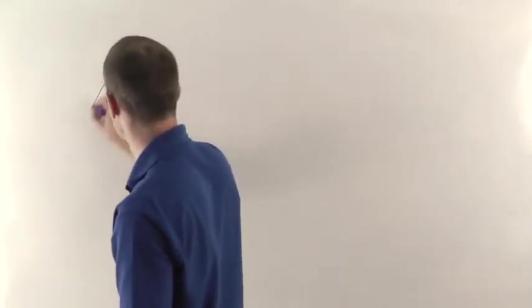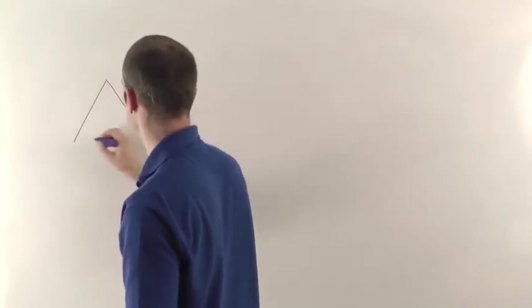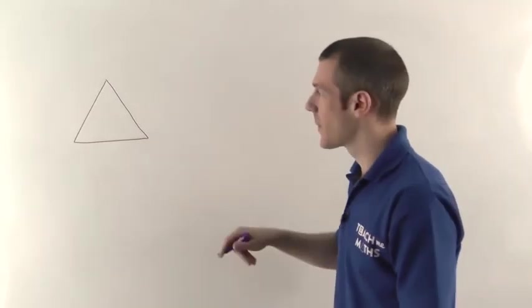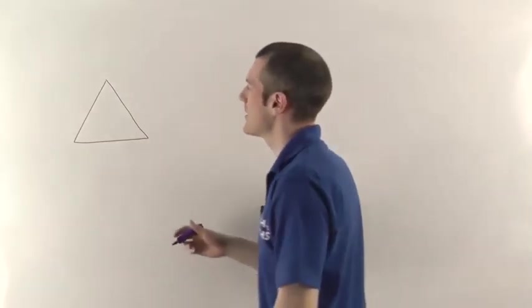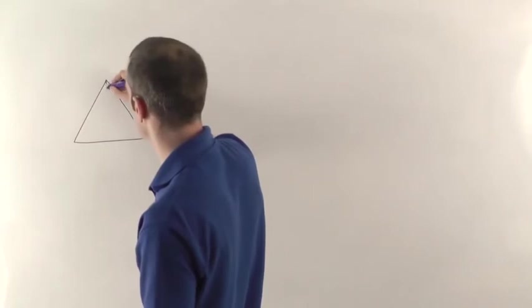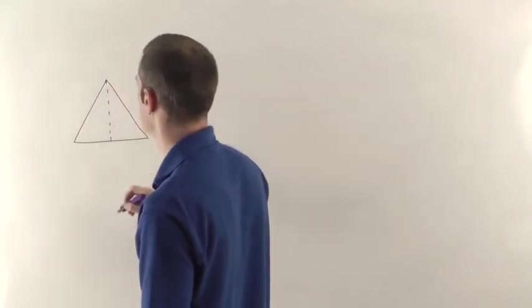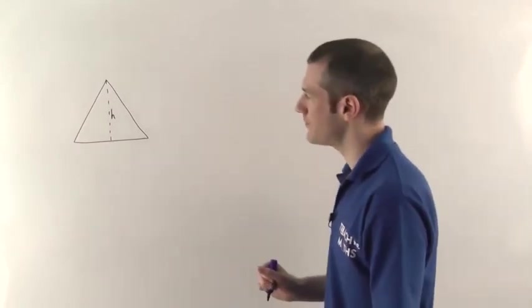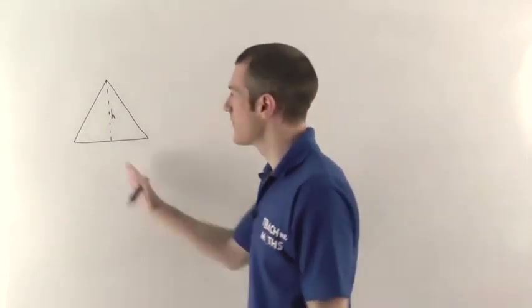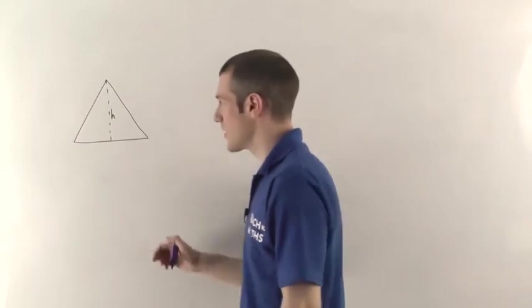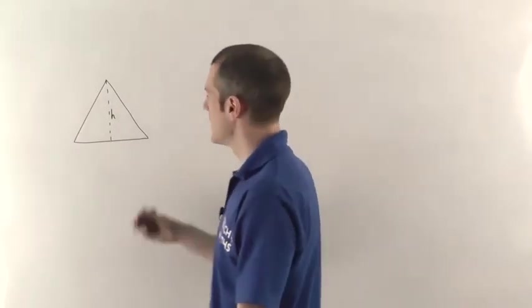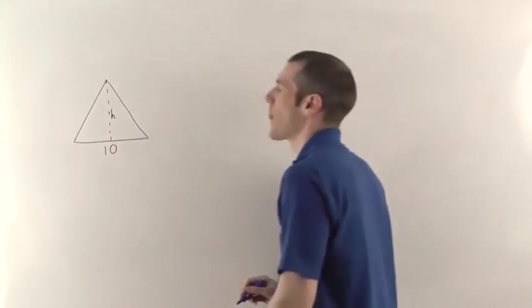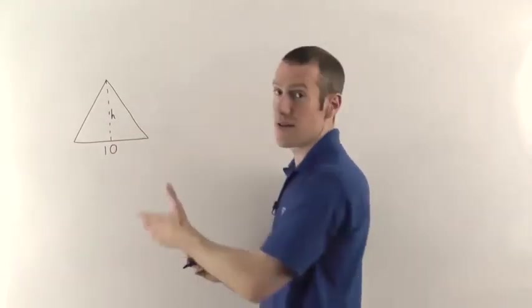Imagine you had an equilateral triangle, so all three sides are the same length, and all the angles are the same, and they wanted you to find the height of the triangle. So we'll call that h for the height of the triangle. They tell you that the length of one of the sides on the triangle, which is the same for all three sides, is, let's say, 10. And we want to find out, as I say, the height there.